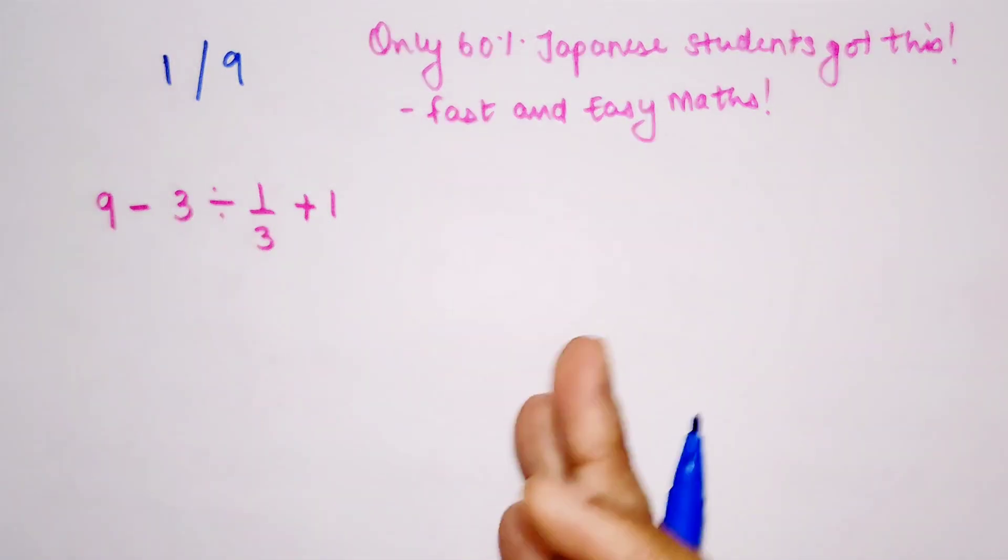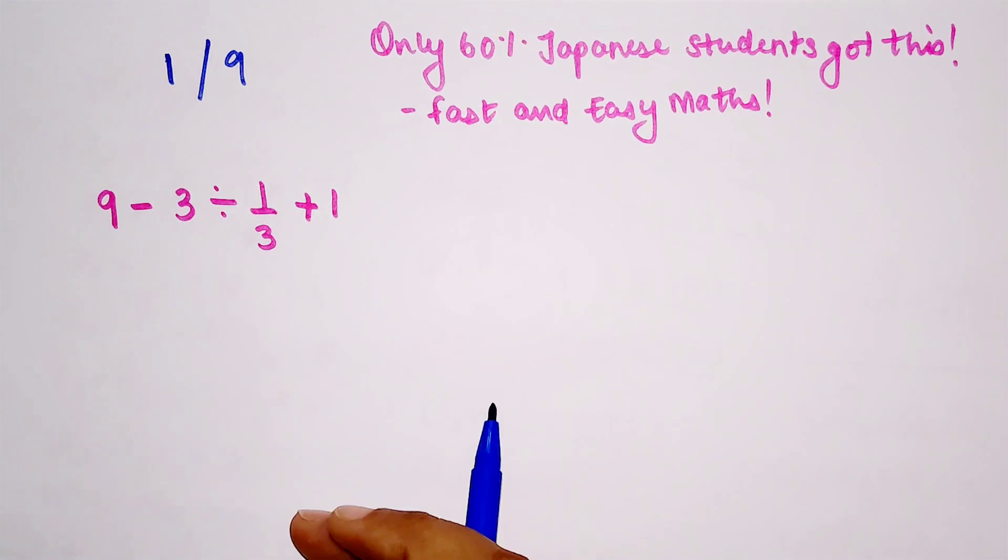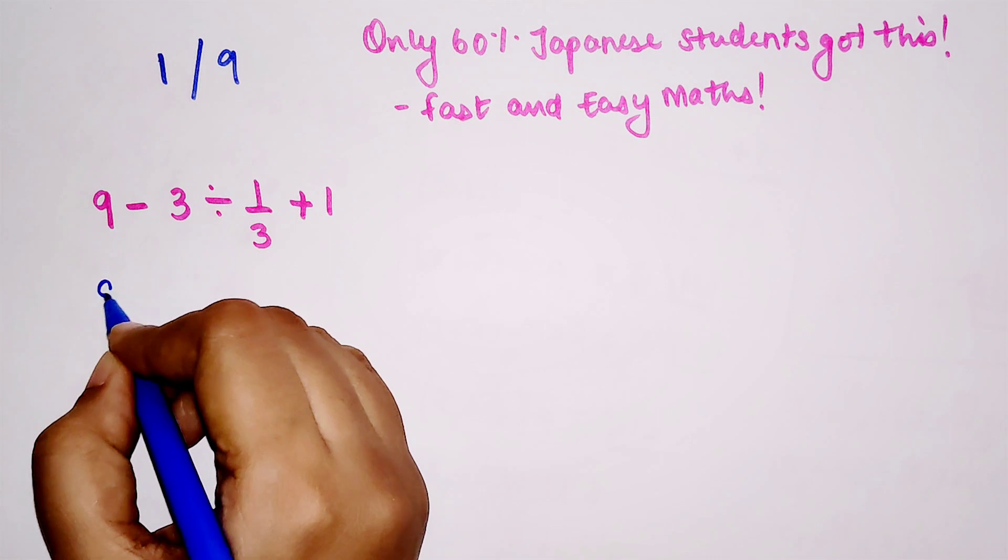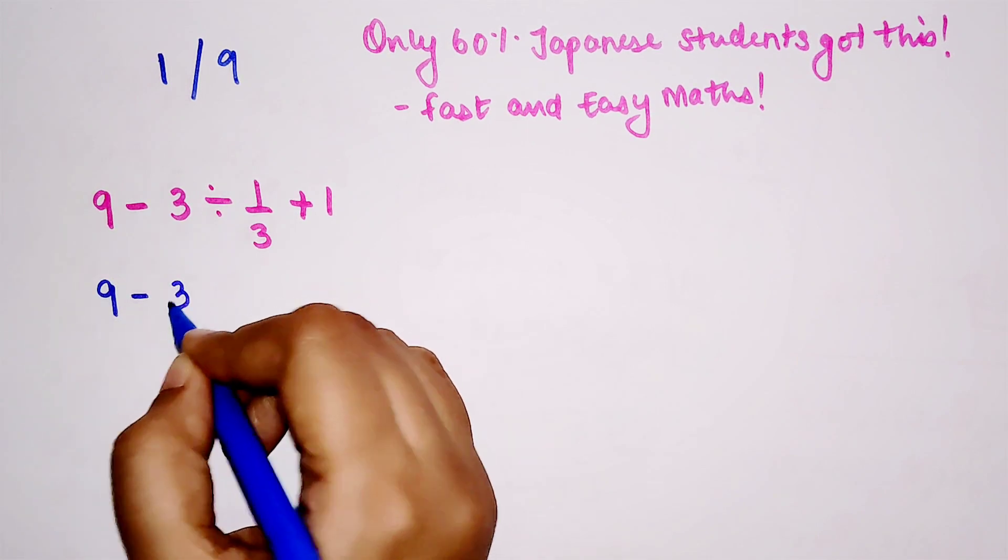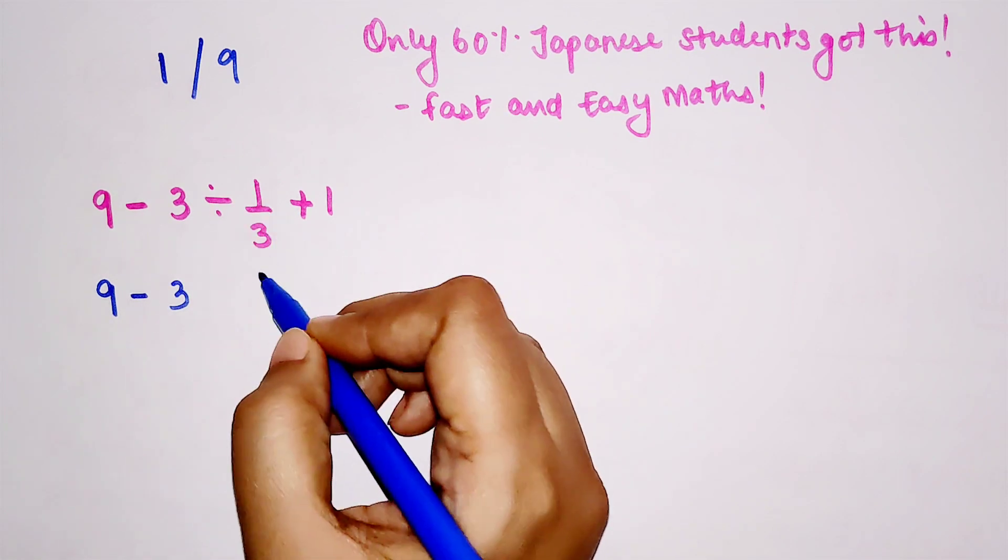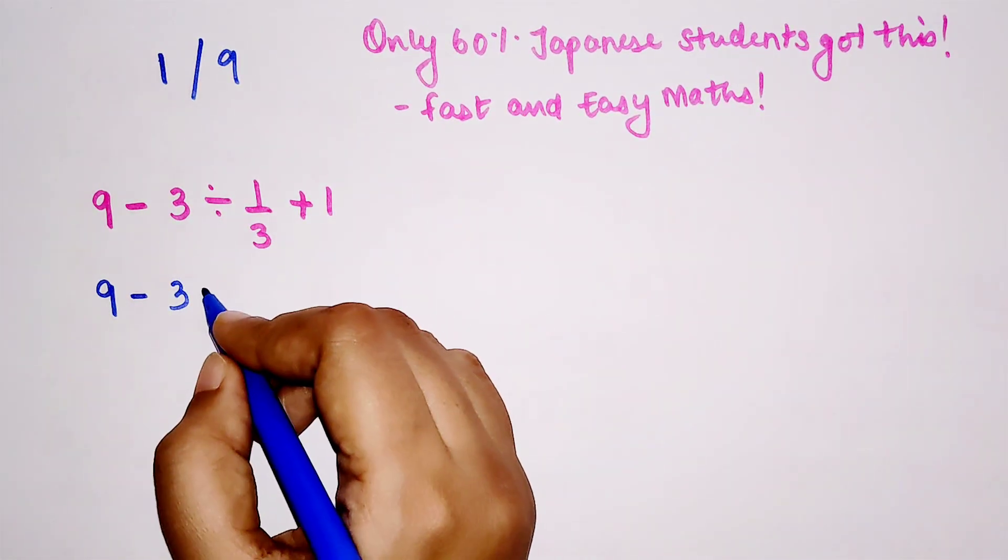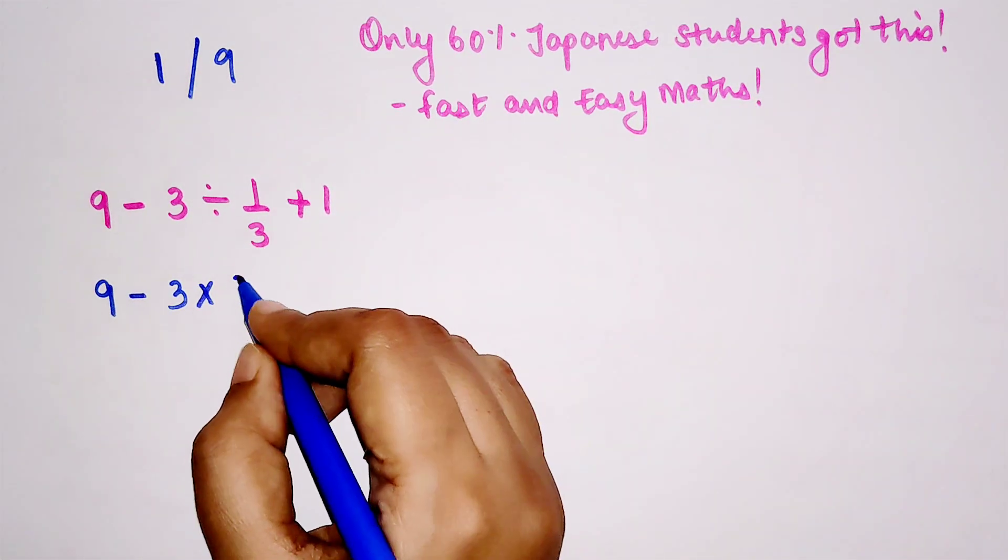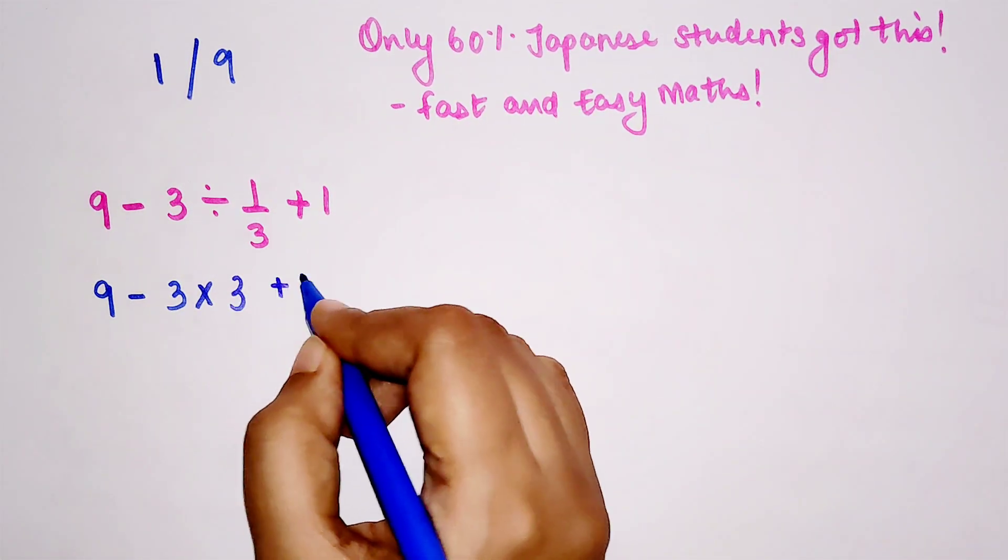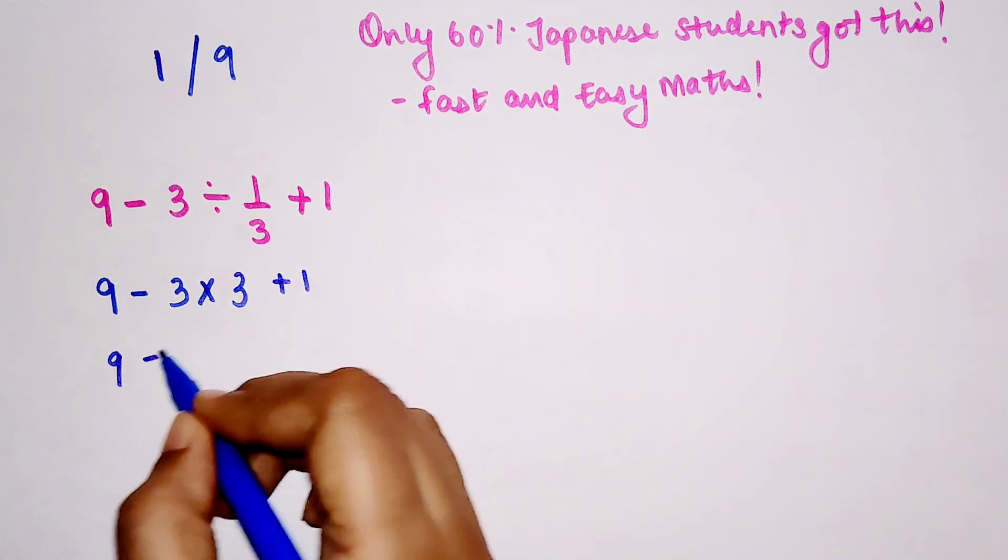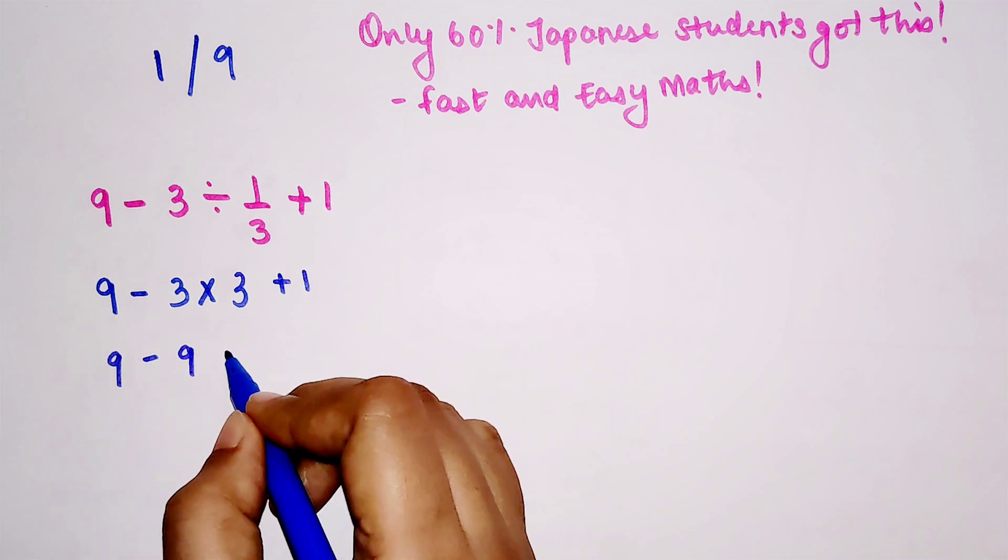According to BODMAS, we know that 9 minus 3—this is division sign—and there's a fraction. If you want, we can convert this sign into multiplication and reverse this fraction, so this becomes 3. Then 9 minus 3 times 3 plus 1.